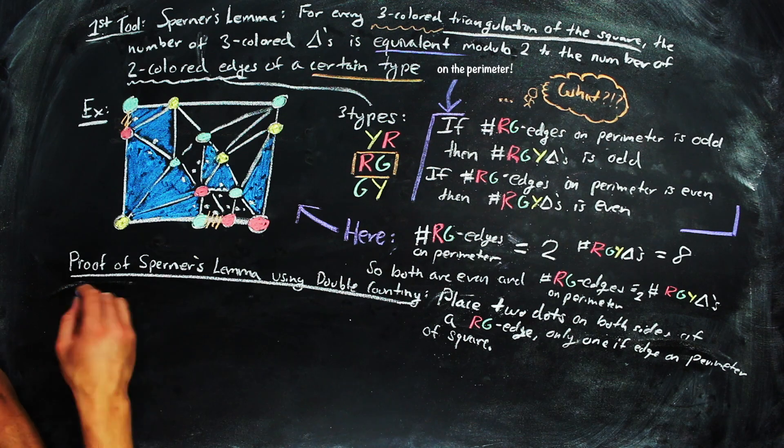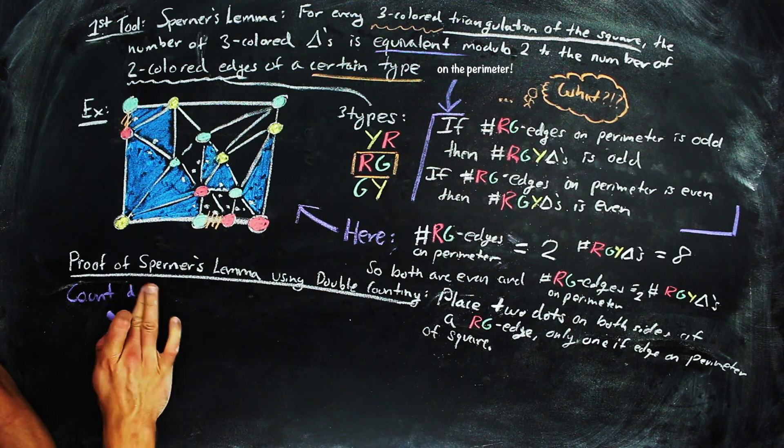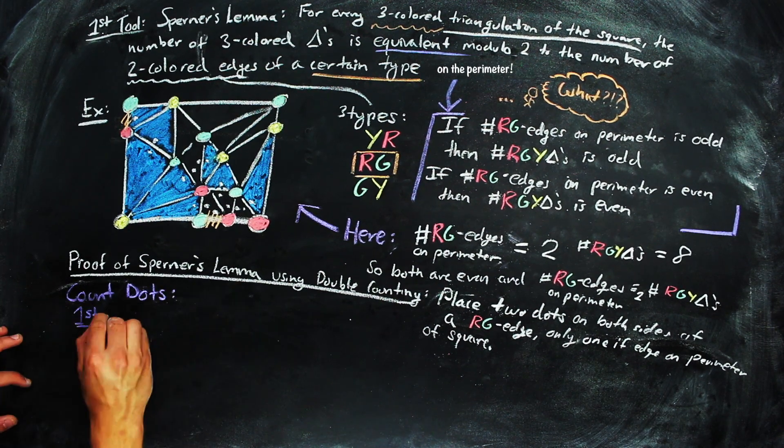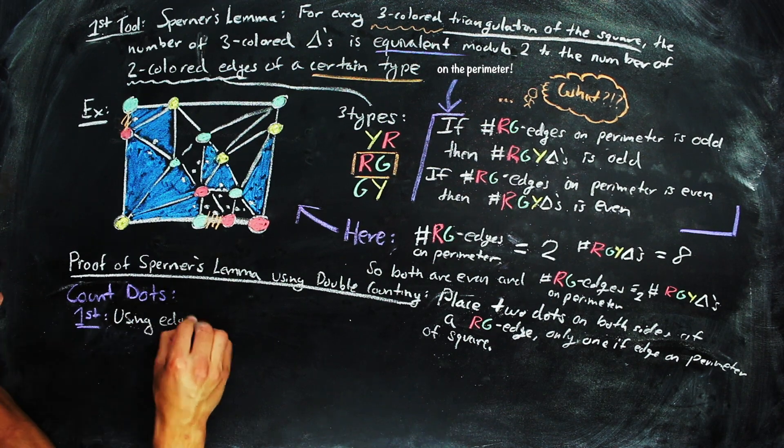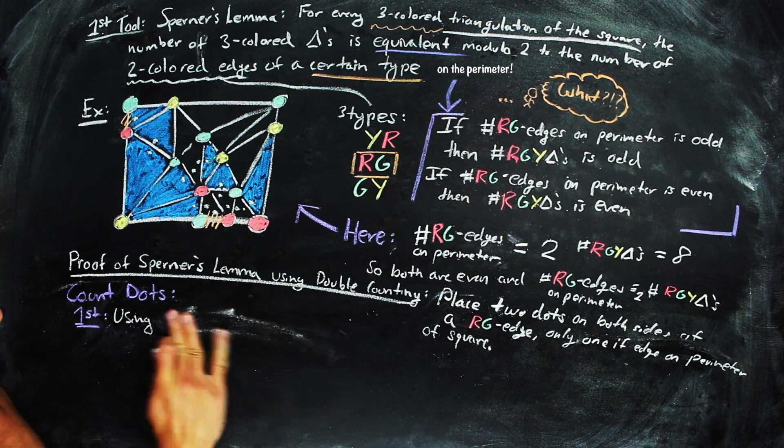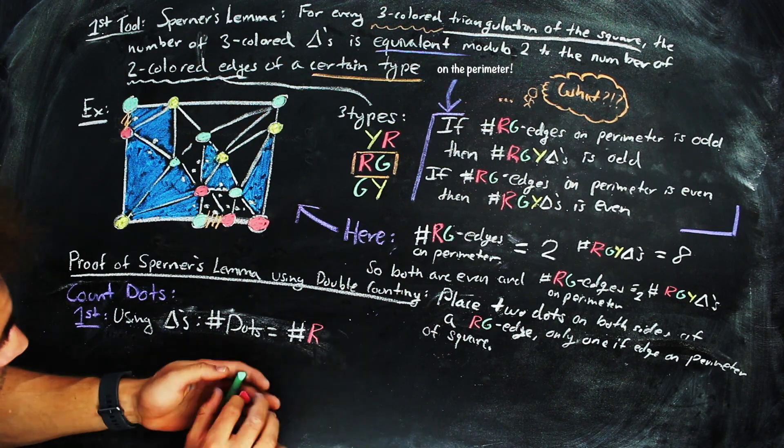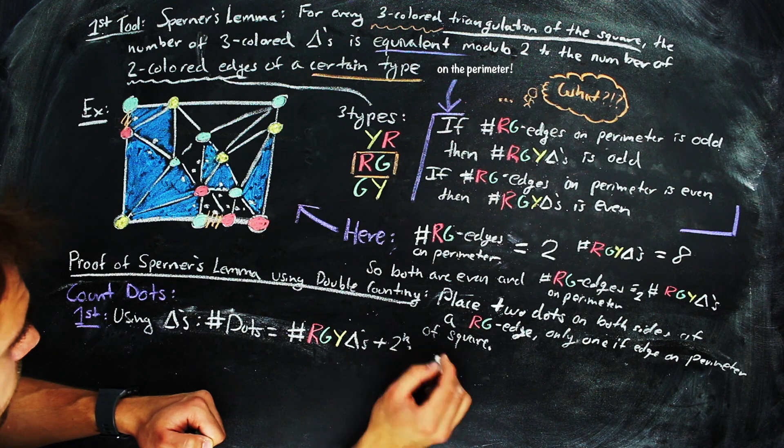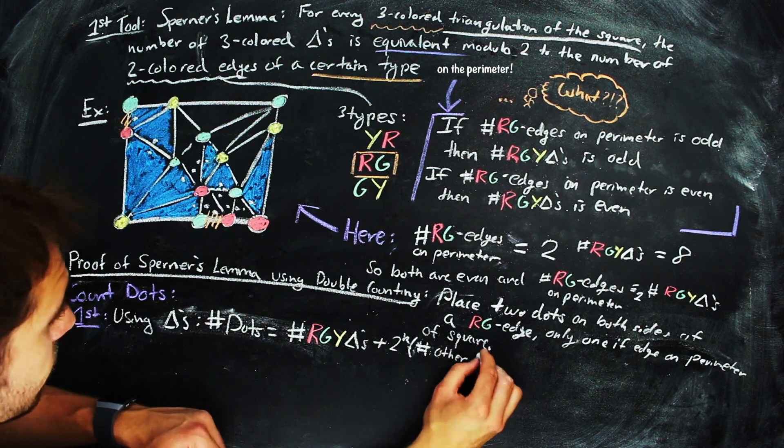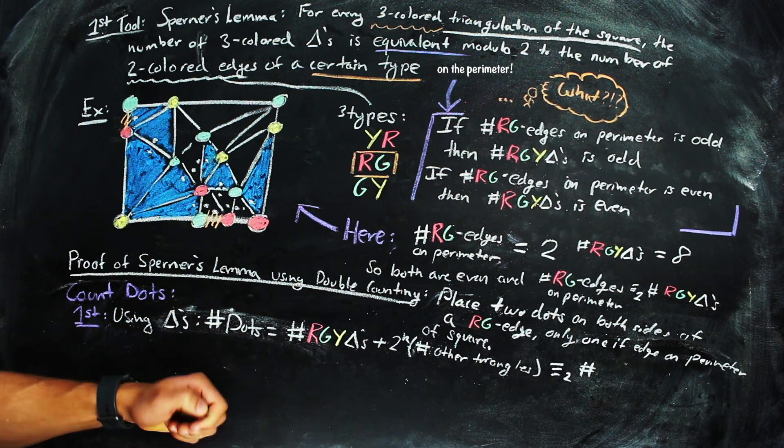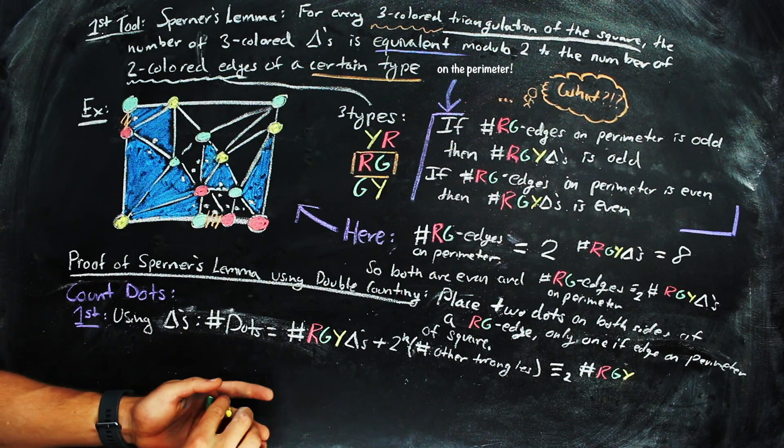Now, using triangles, we can go ahead and count the number of dots. To do this, if we look at a three-colored triangle, there is only one dot, as there is only one red-green edge, and in all other triangles, there are either zero or two dots. So, since we're counting modulo 2, the number of dots is the number of three-colored triangles modulo 2.